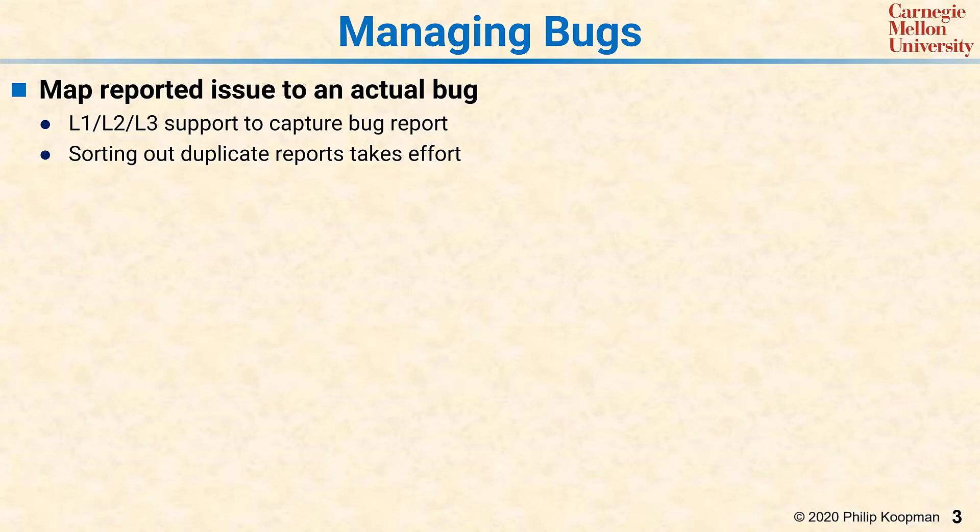Typically, there's a Level 1, Level 2, Level 3 support organization to capture the bug reports, with Level 1 being the frontline support, which is generally script-driven and usually involves users not understanding something about the software or not having read the manual. It works up through Level 2 specialists to Level 3, which is typically engineering support. The idea is there's a screening and filtering function, so only things likely to be actual real software bugs make it to Level 3 to be fixed.